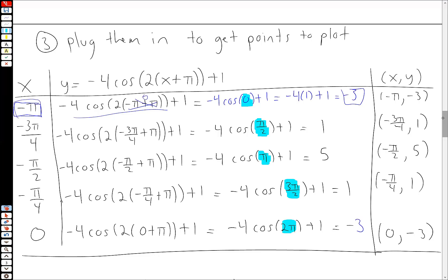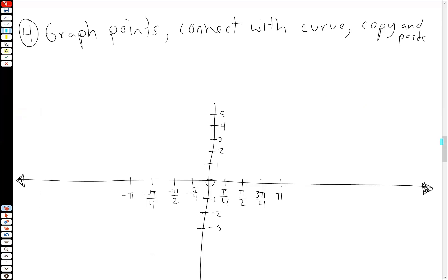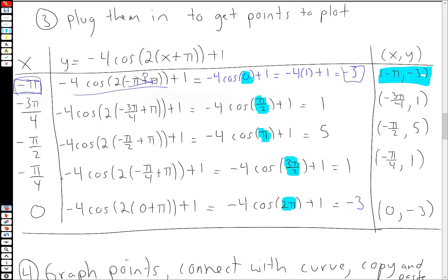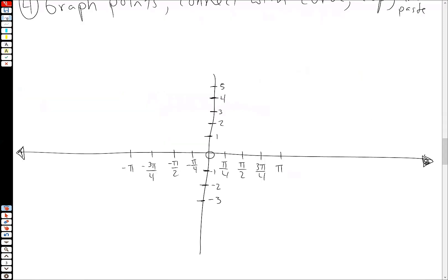All right. Now that we have this, we graph our points, connect, copy and paste, and we're good to go. We've done the hard part. All right. So let's go ahead and graph our points. We have minus π minus 3. So minus π. And notice here, I didn't talk about this, but here's my x and y axis.